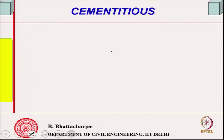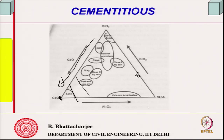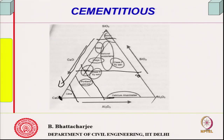If you see all cementitious materials on a triangular diagram with lime, SiO₂, and Al₂O₃ at the vertices: slag will have its lime percentage, silica percentage, and small alumina percentage plotted. Silica fume, being rich in silicon oxide with very low CaO and low Al₂O₃, plots near the 100% SiO₂ corner. Portland cement, Class C fly ash, Class F fly ash, slag, natural pozzolans — all appear at different positions in this diagram.